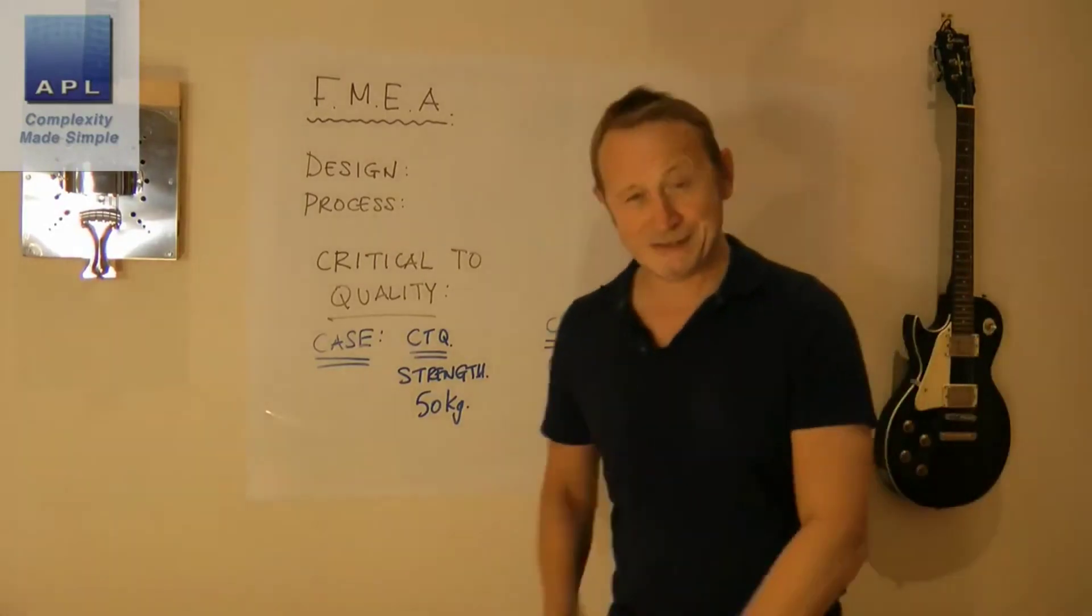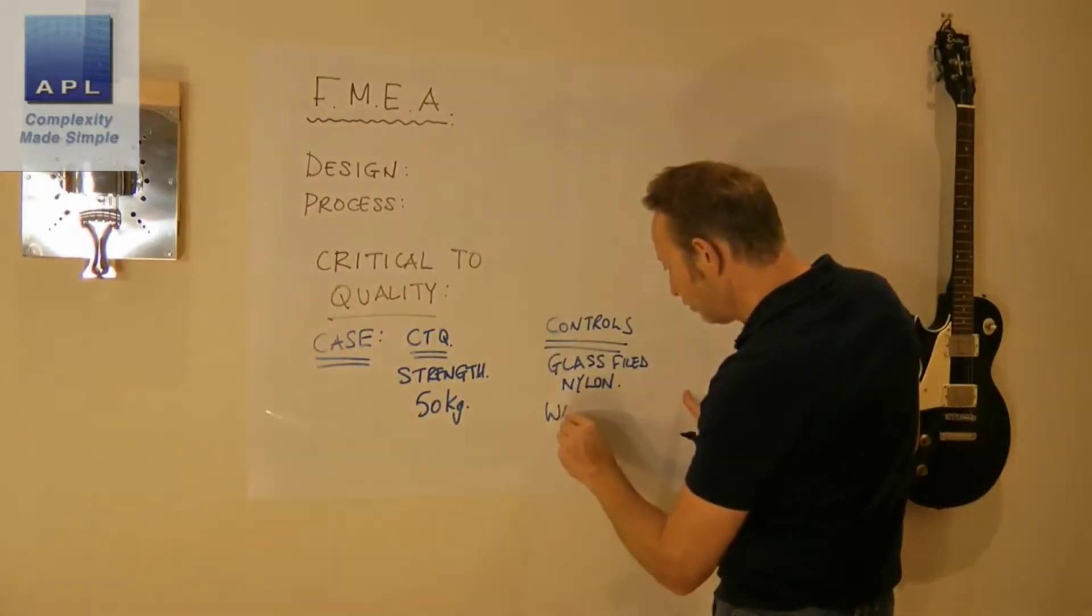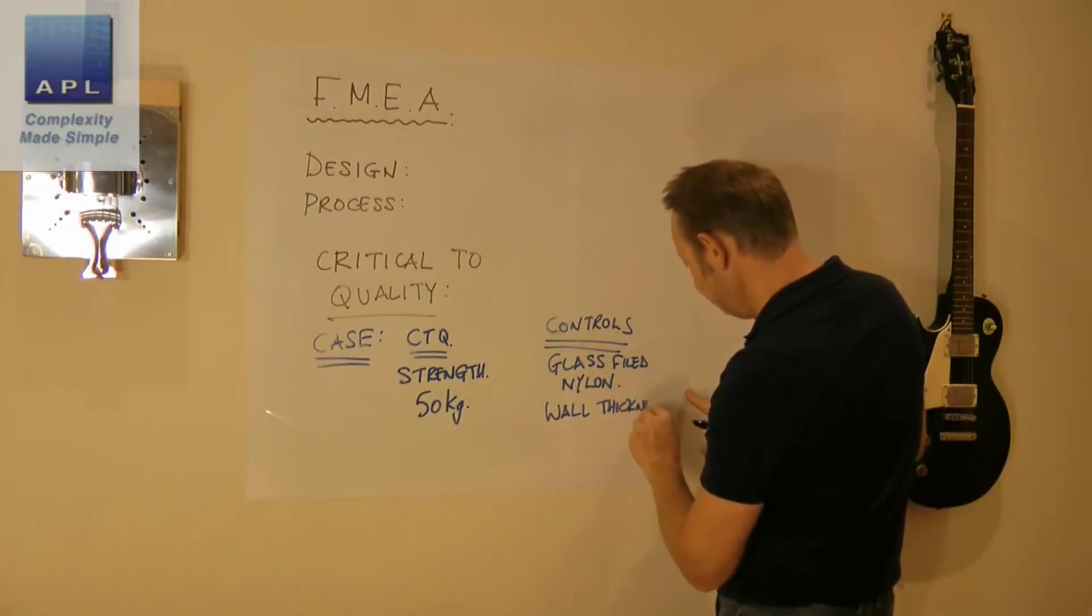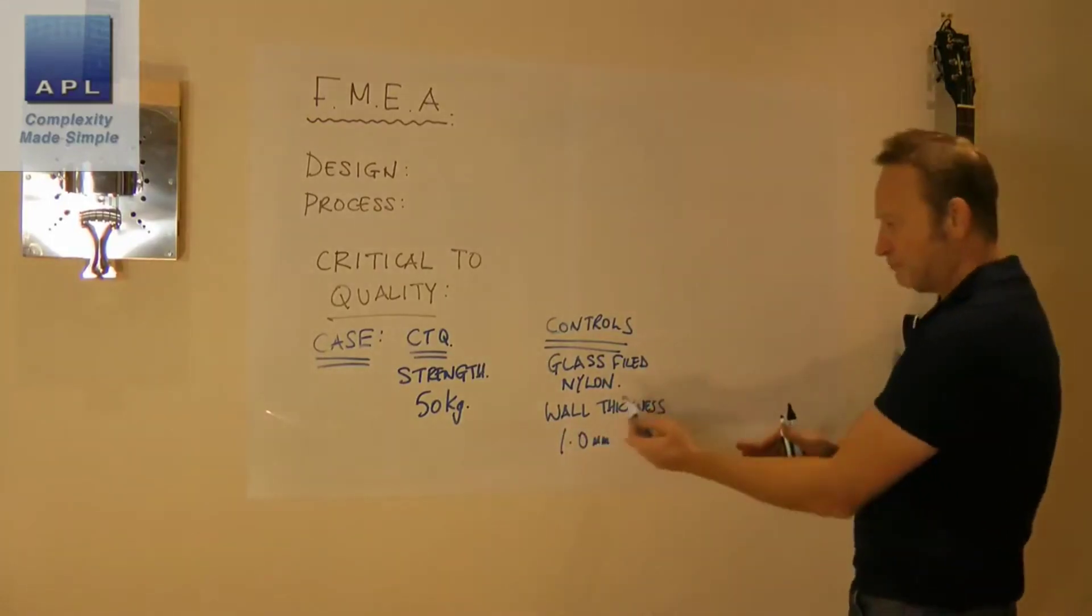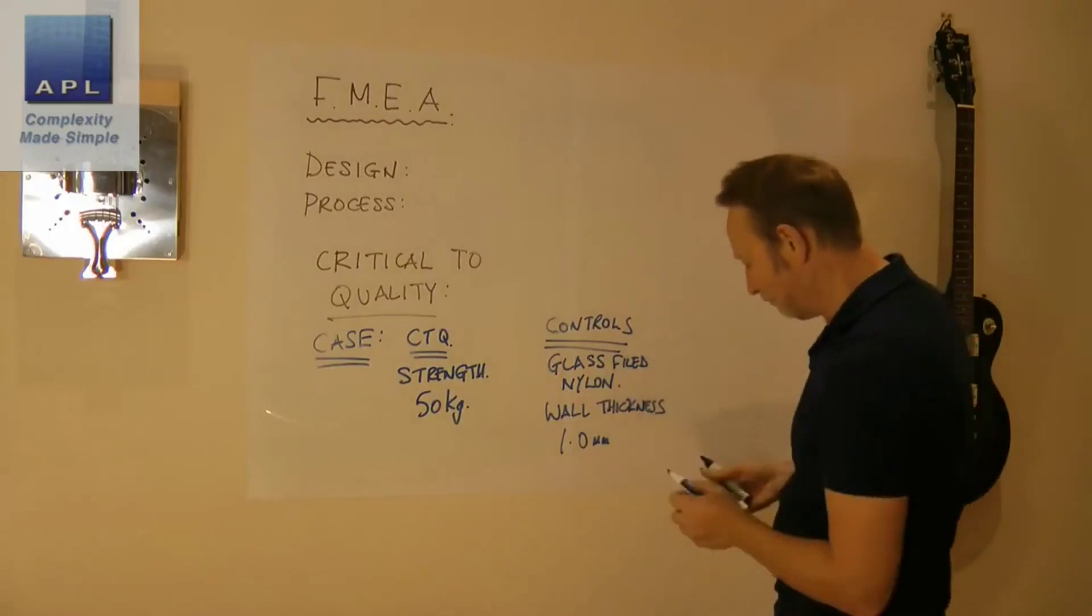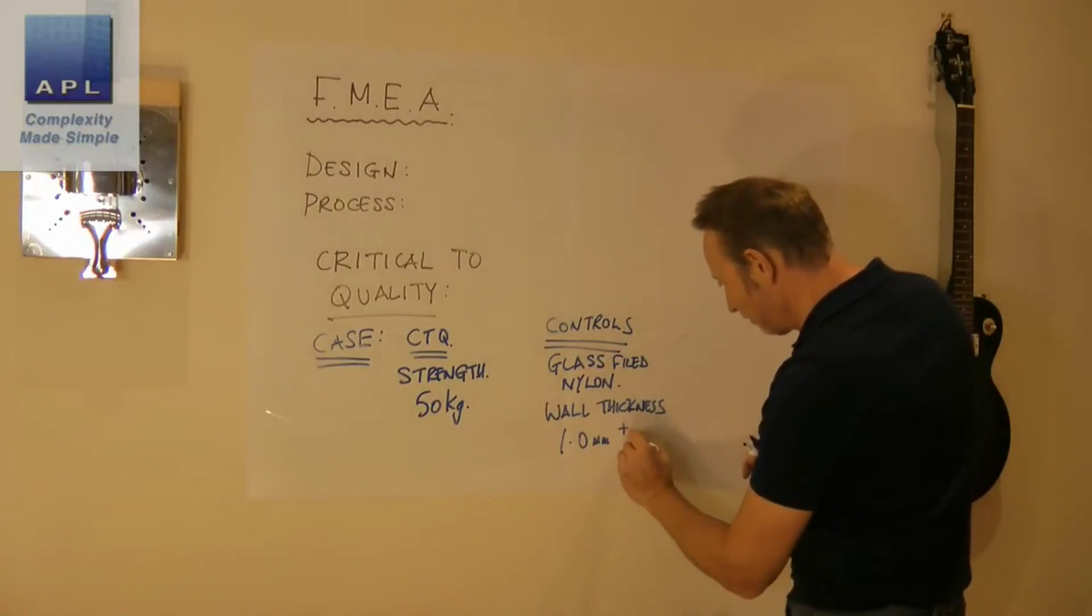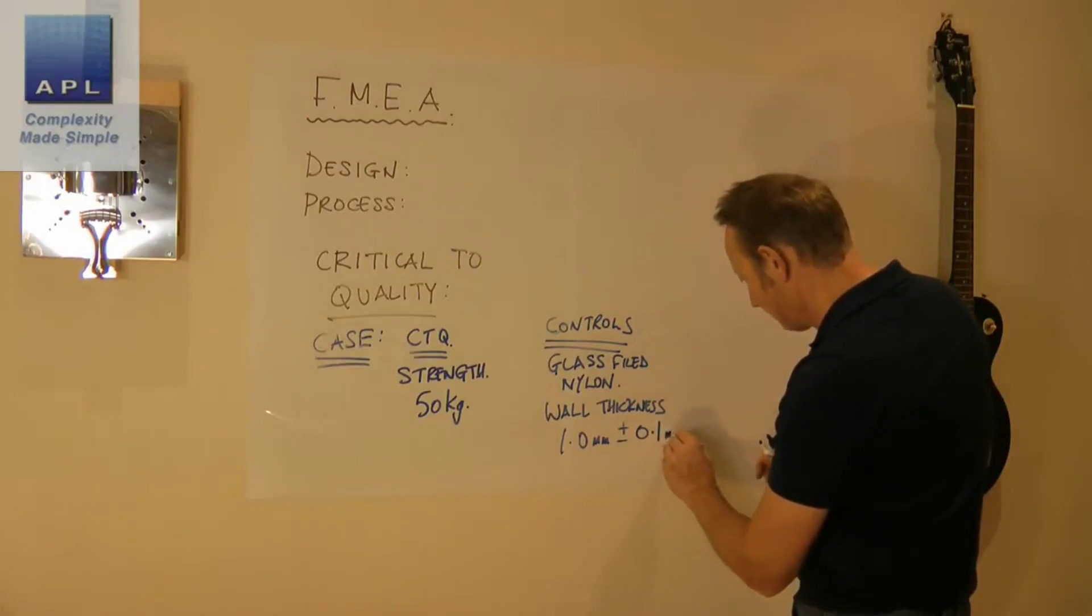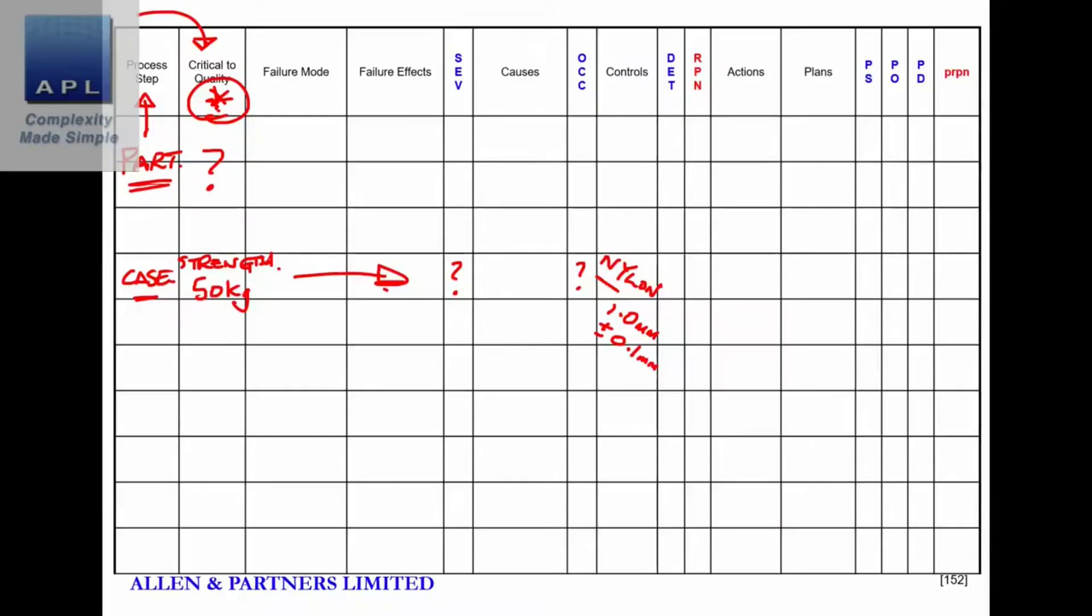So he decides to go with glass-filled nylon. He decides that the raw material he's going to use is glass-filled nylon. And he decides that the wall thickness has got to be one millimeter. And because there's a certain level of safety on this in terms of calculating its strength, maybe he doesn't have to put a particularly tight tolerance on it. So he says it's one millimeter plus or minus 0.1.